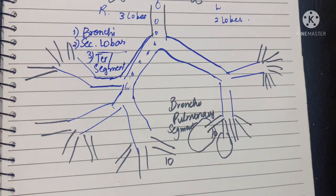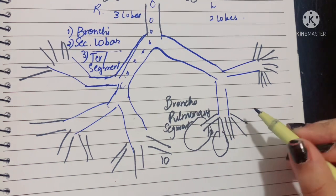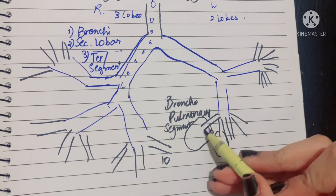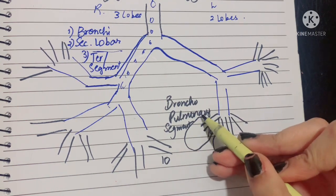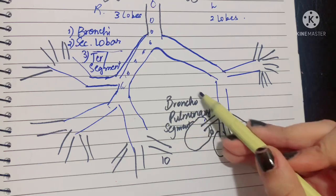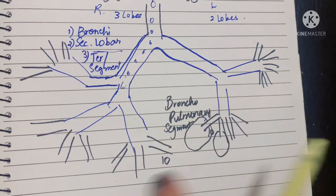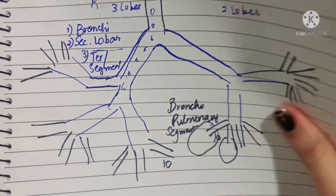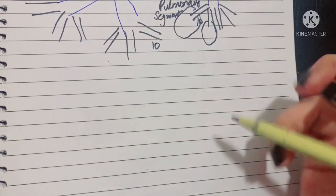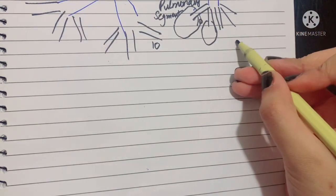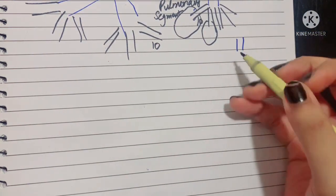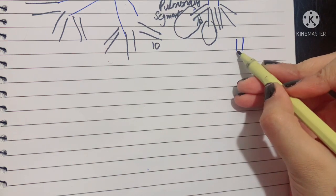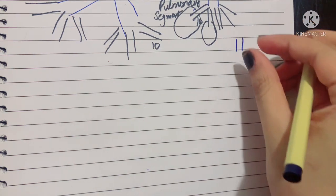The bronchopulmonary segment is a very important topic we will focus on shortly. What's important to know now is that the segmental bronchus supplies the entire bronchopulmonary segment, and there are 10 bronchopulmonary segments inside each lung.